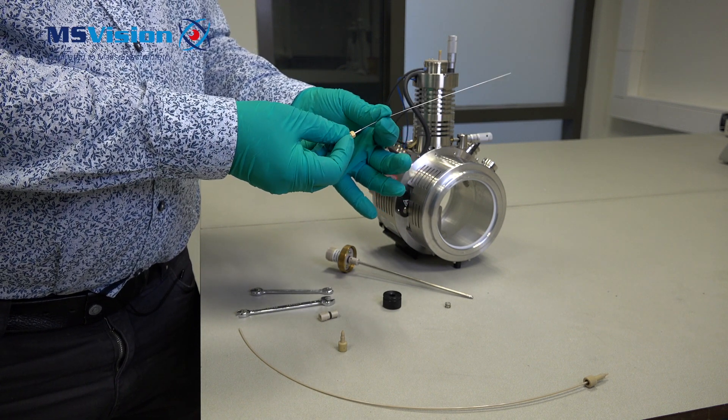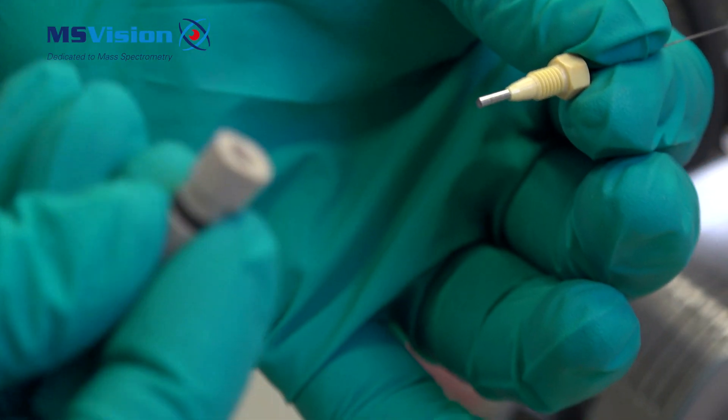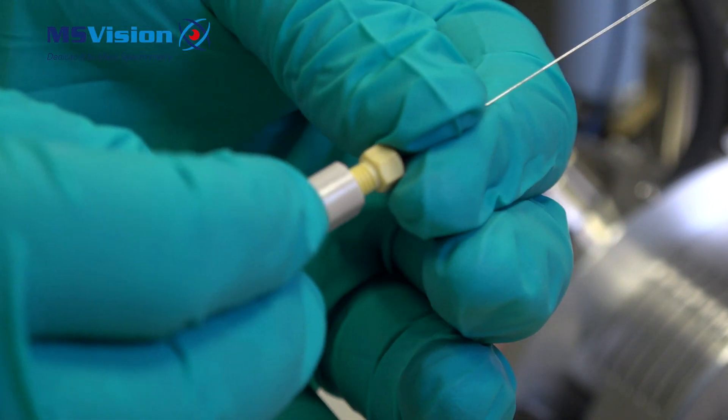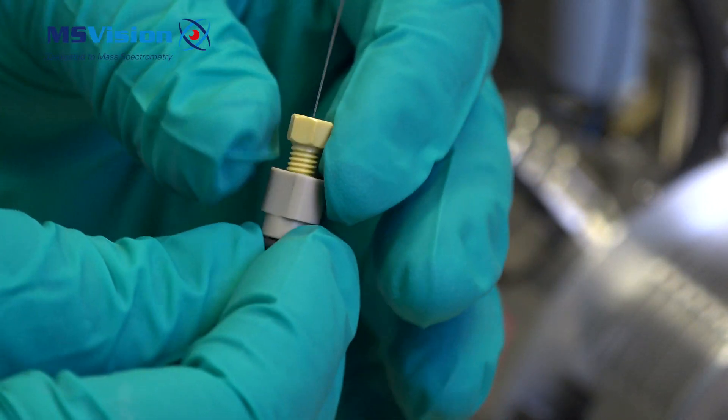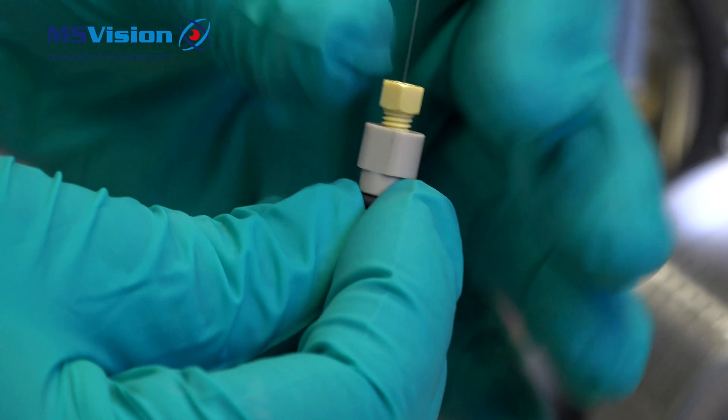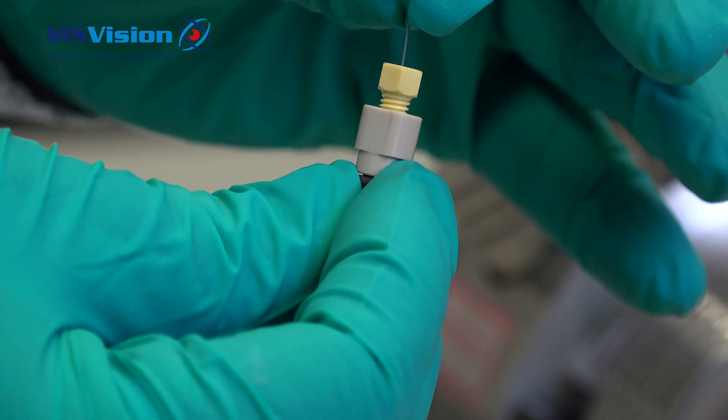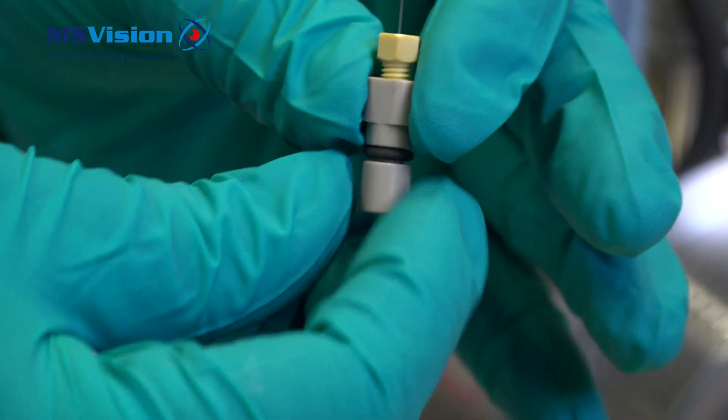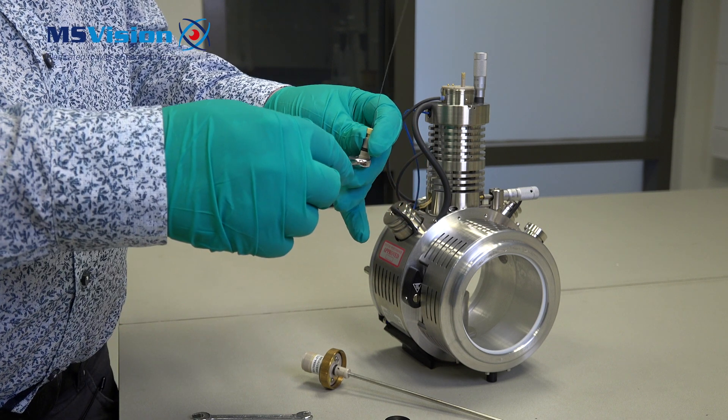Take the new capillary and slide it into the nut, then take the holder and screw it in finger tight. Make sure the capillary is pushed down and then tighten it a quarter turn using the two spanners.